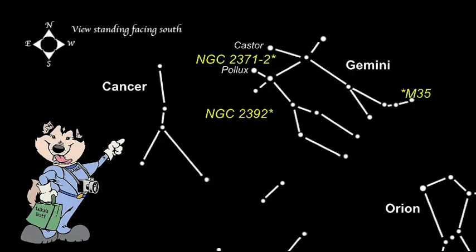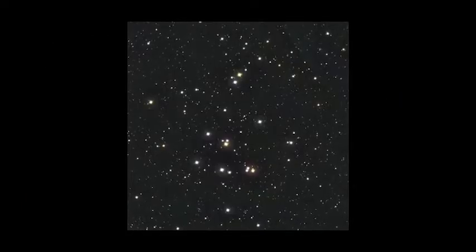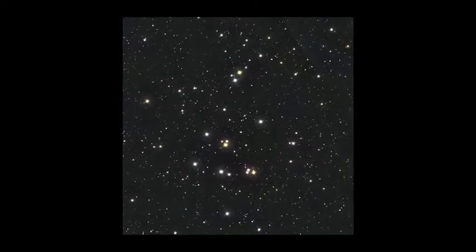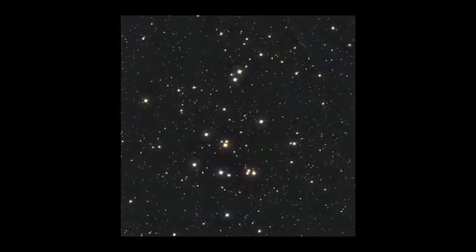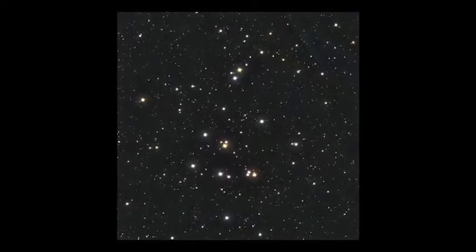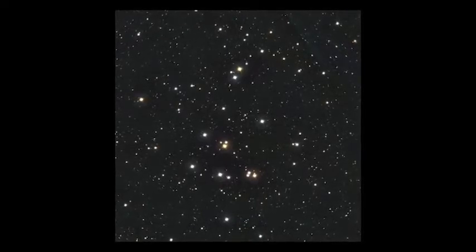Now let's move over to Cancer. Here, you will find two Messier objects. M44 is an open cluster, the beehive cluster. It has a magnitude of 3.7 and can be seen with the naked eye in dark sky areas. It is one of the nearest clusters to earth.